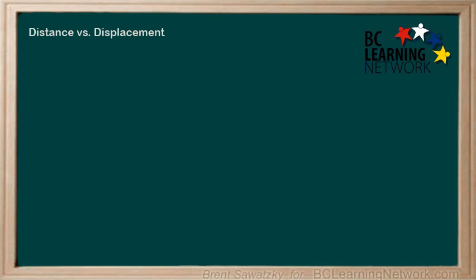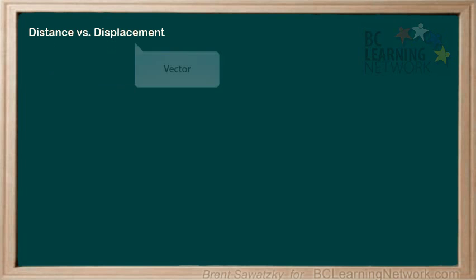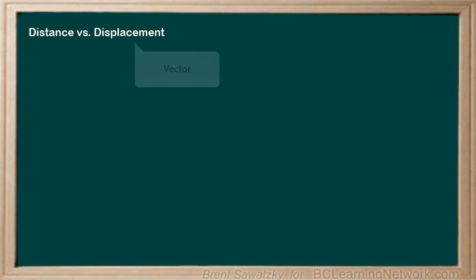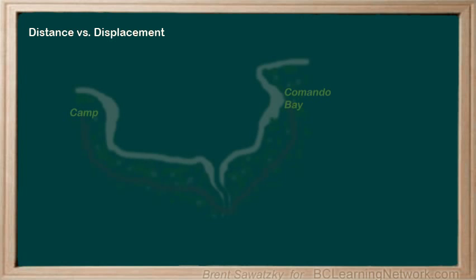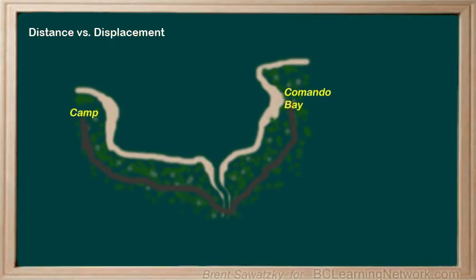At this point, we've clarified that distance is a scalar quantity and displacement is a vector quantity. Let's dig a little more into that to see what it really means to us. Let's start off with an example. Consider three hikers. They start out at a campsite and are supposed to meet at Commando Bay for lunch.